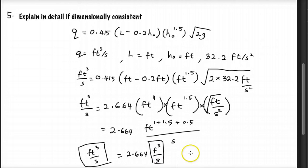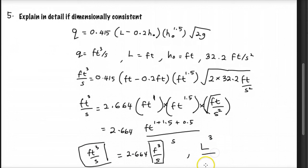The dimension of Q is L³ over T, with feet as length and seconds as time. That's question 5, and that's the end of tutorial 2 for this topic. Thank you.